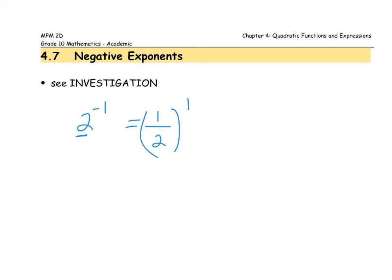We can extend that and have a general rule: if we had x to the power of negative one, then that would be equal to one over x. And if I had y to the power of negative two, I could go ahead and make that exponent positive by making the base a fraction over one and then squaring.